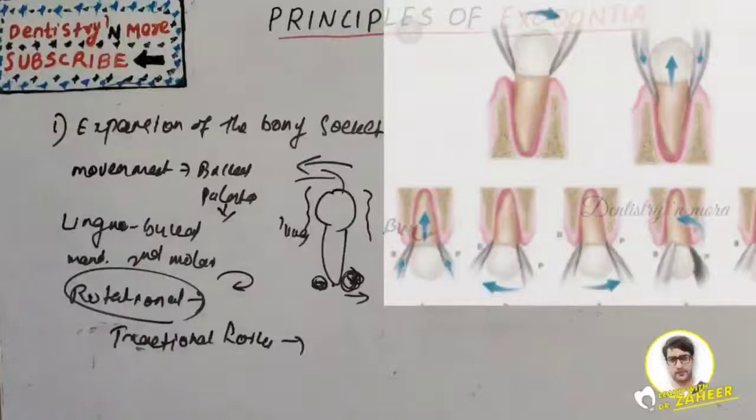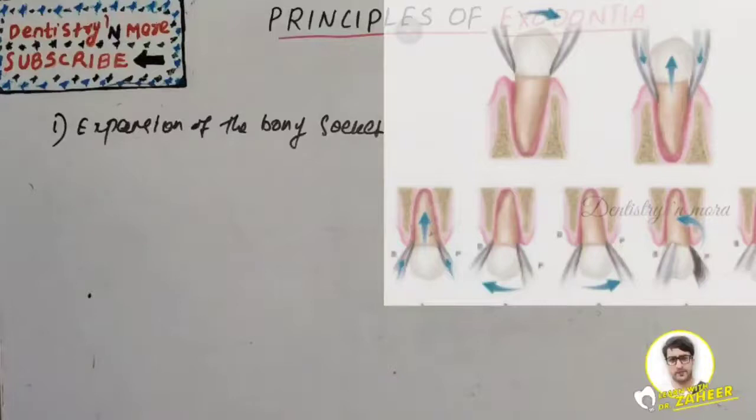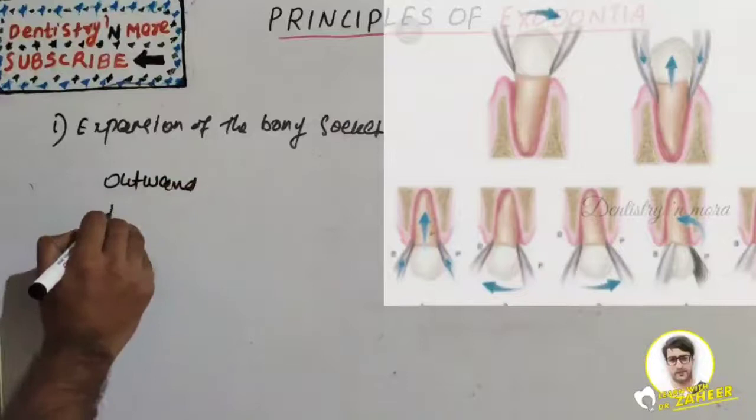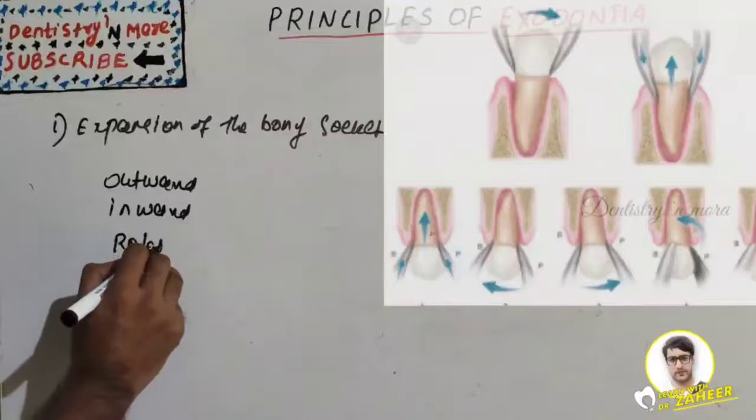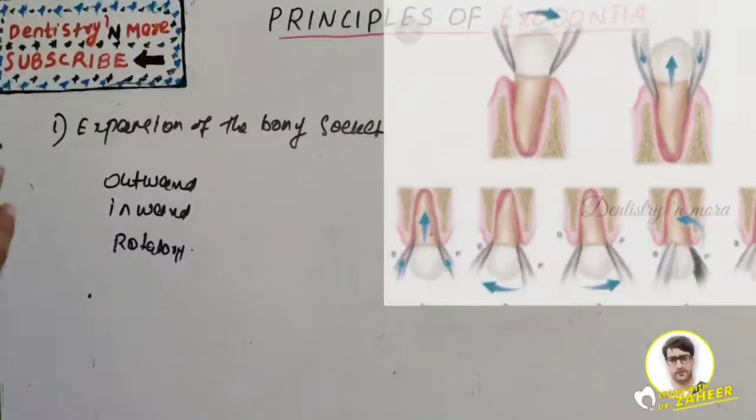The proper use of forceps in laxation and removal of teeth involves essentially three movements: outward, inward, and rotatory. The outward movement — that is buccal or labial — is the initial movement for all teeth except the lower second and third molar, where the buccal plate of bone is reinforced by the external oblique ridge.